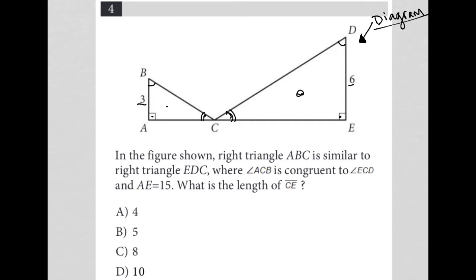So whatever AC is, EC is double that length. And whatever BC is as a measurement, DC is two times that length. ABC is similar to right triangle EDC, where angle ACB is congruent to angle ECD, and AE equals 15. So we know that this entire thing is 15.